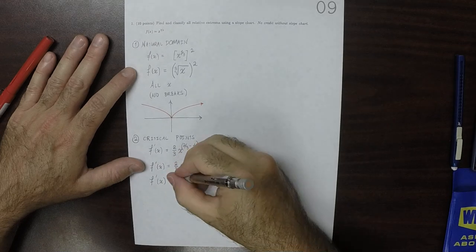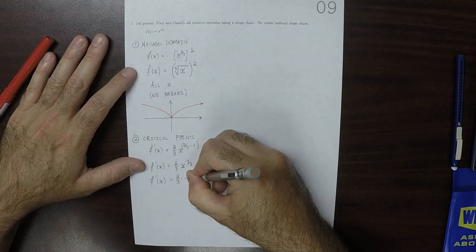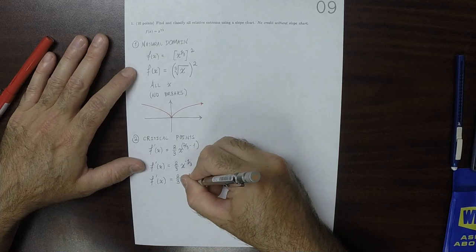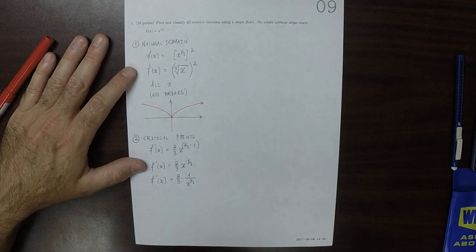And I'll rewrite it in this way. So you could say that that's two-thirds multiplied by one over x to one-third. So that's moving that to a denominator, so it has a positive exponent.